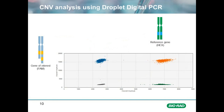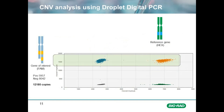Upon analysis, for each sample tested we will get a two-dimensional plot with four clusters of droplets. In this example, there are droplets that are positive in the upper half of our plot — these are the droplets that amplified our gene of interest within them. If we calculate how many are positive and how many are negative, we see that 5,957 droplets were positive and 8,042 were negative. This equates to 12,180 copies of our gene of interest per reaction.